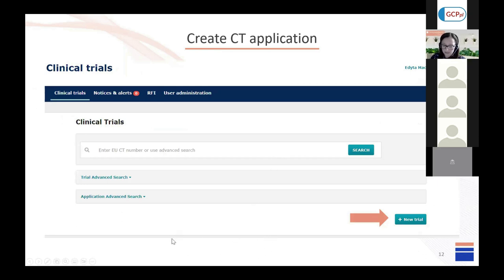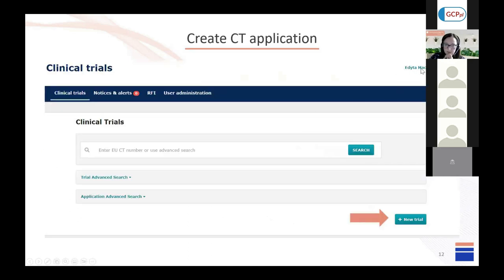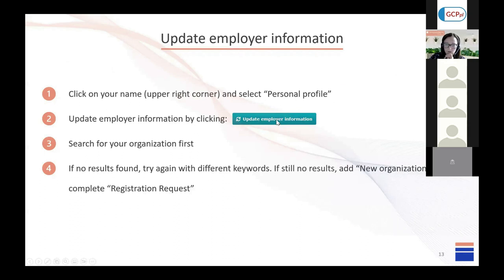This is the CTIS homepage. Here you have a button to create a trial. What I want to highlight is that under your name there are two tabs. One of them is personal profile, where you may receive a notification to update your employer information. When you go to personal profile and click on 'update employer information', your profile will be affiliated with the organization.